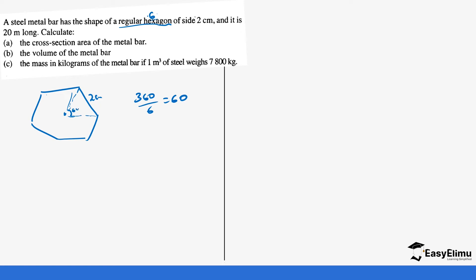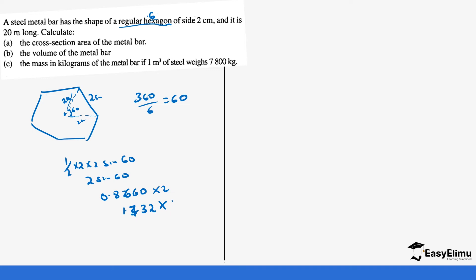So the angle is 60 degrees. You can drop a perpendicular bisector, and you'll notice both sides remain 2 centimeters. The area of one triangle is one-half times 2 times 2 times sine 60, which equals 2 times sine 60. Sine 60 is 0.8660, so 2 times 0.8660 gives 1.732 centimeters squared.